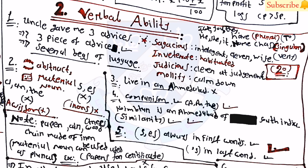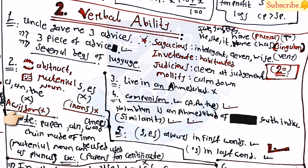Vocabulary: 'sagacious' means intelligent, clever, or wise; 'inveterate' means habituated; 'judicious' means clever or of good judgment; 'mollify' means to calm down. For noun types, with abstract nouns or material nouns you cannot use articles (a/the) or plurals (s/es). For example, 'wisdoms' is wrong because wisdom is abstract, and 'irons' is wrong because iron is a material noun. However, you can use s/es for things made from material nouns — for example, 'papers are made from trees' is correct.